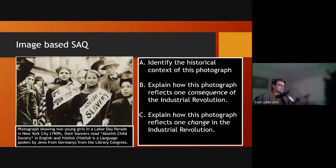Here we have an image as our stimulus for this SAQ, and according to the source, which is down here at the bottom, it says a photograph showing two young girls in a Labor Day parade in New York City in the year 1909. Their banners read 'abolish child slavery' in both English and Yiddish, Yiddish being a language spoken by Jews from Germany.